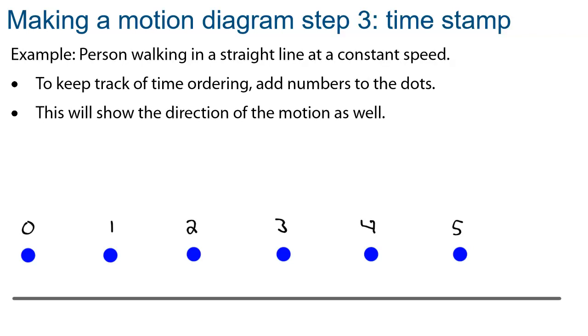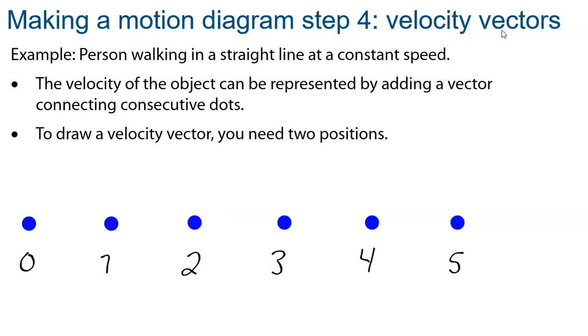Once the particles are in place and the numbers, we can try to add the velocity vectors. Velocity vectors in here will be representing the speed and the direction, so the velocity of the object, by connecting an arrow between the dots. You start the vector at 0.0 and you end it at 0.1, then you start the vector at 0.1 and you end it at 0.2, and so it goes until the end. If the distance between the points changes, then the length of the arrow will change accordingly. In here, it's constant speed, so we expect that the arrows will all be the same length.